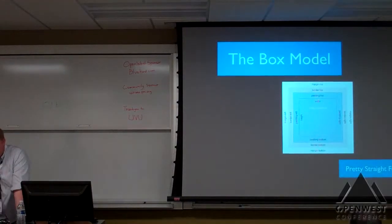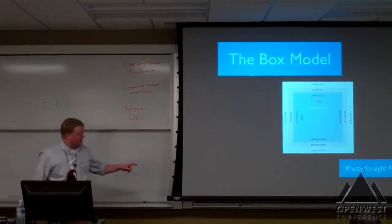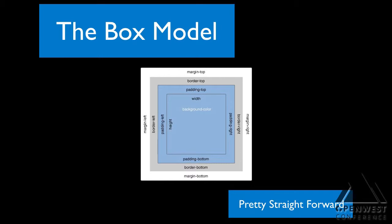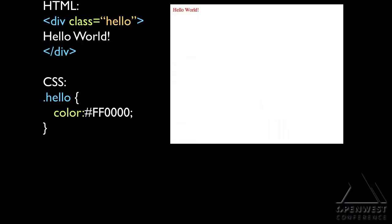The box model itself is pretty straightforward. You have your width, your padding, your border, and your margin. Every type of block element in your document will have these different layers. In a demo: here's our HTML, class 'hello world,' it's a div, and we tell that class 'you're going to have a color of red.' Simple enough.